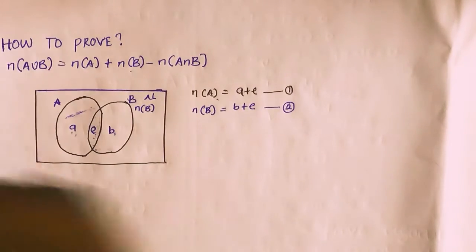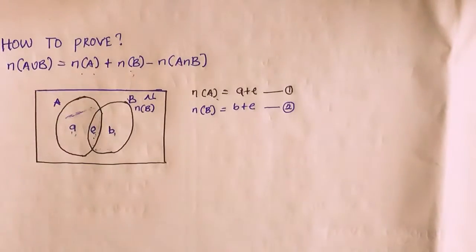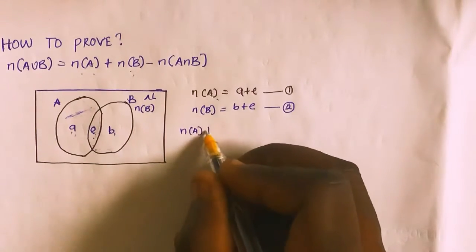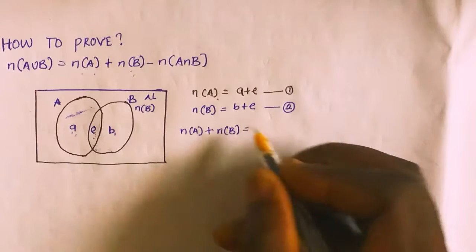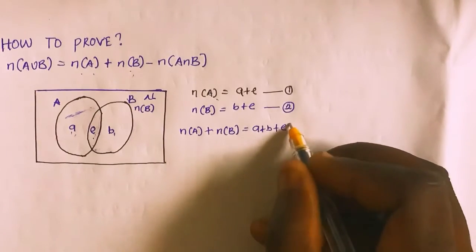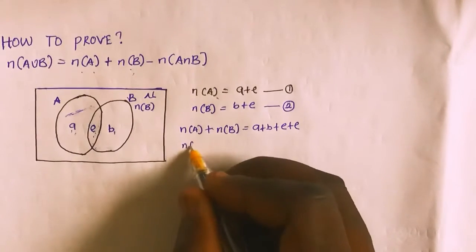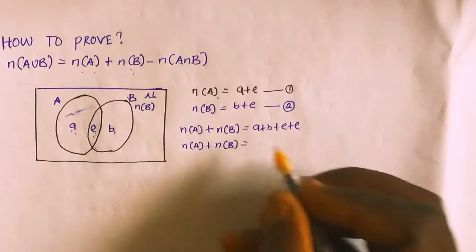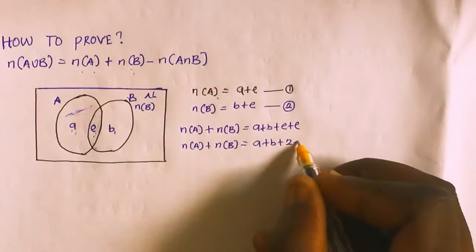Now I'm going to sum both equations together: cardinality of A plus cardinality of B. That will equal A plus E plus B plus E, which simplifies to A plus B plus 2E.